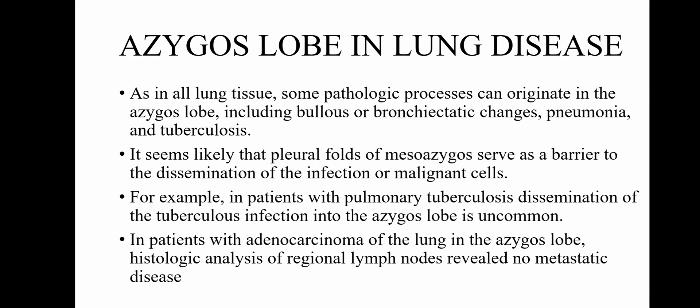As in all lung tissue, some pathological processes can originate in the azygous lobe such as bronchiectatic changes, bullous changes, pneumonia, and tuberculosis. It seems likely that the pleural folds of the mesozygous serve as a barrier to the dissemination of infection or malignant cells.